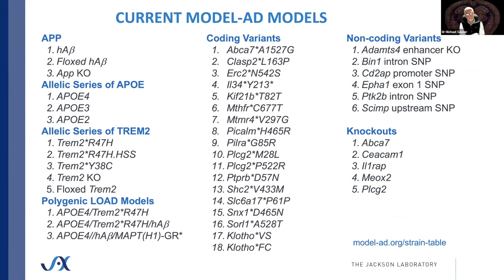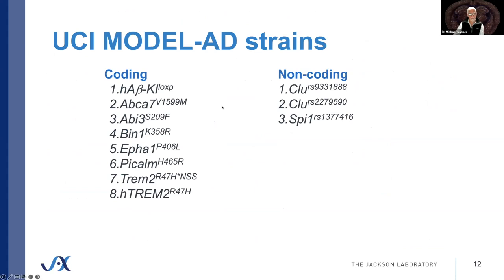This is the set of models we've created to date. We have a humanized Aβ, a flox humanized Aβ from the UCI Model AD center, an allelic series of APOE, an allelic series of TREM2, and these polygenic LOAD models. We started with coding variants, largely SNPs, and we either have data or are generating data this summer — by fall we'll have at least transcriptomic data on all of these. We're also now focusing on non-coding variants, with data expected later this year. All of these are available today, though we don't yet have publications or full data on some. The UC Irvine Model AD center also has a set of models including Aβ knock-ins and some coding and non-coding variants.